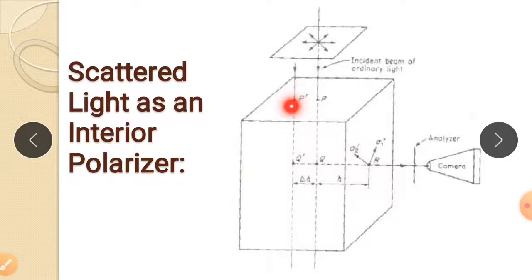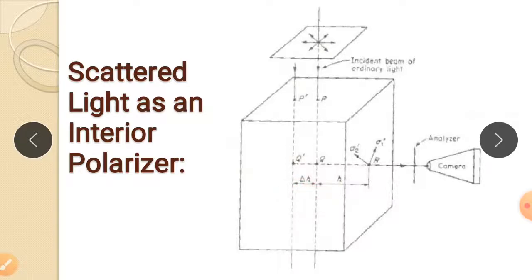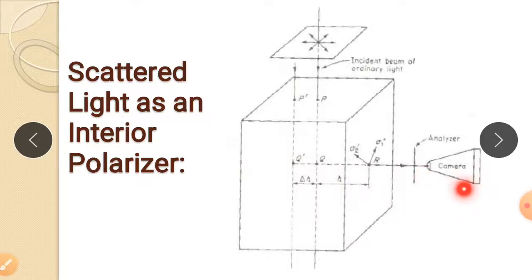By shifting the incident beam of light from P to P', the scattering point moves from Q to Q'. A delta H difference in phase is observed, and the average phase difference over Q' to R is measured by the analyzer. By shifting the incident light from one point to another, you can easily measure the stress at different points along the line of light — this is one of the key advantages for stress determination in three-dimensional photoelasticity.